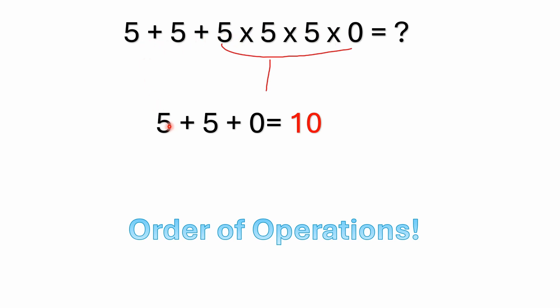And then you're left with 5 plus 5 plus 0 equals 10, and that's due to the order of operations.